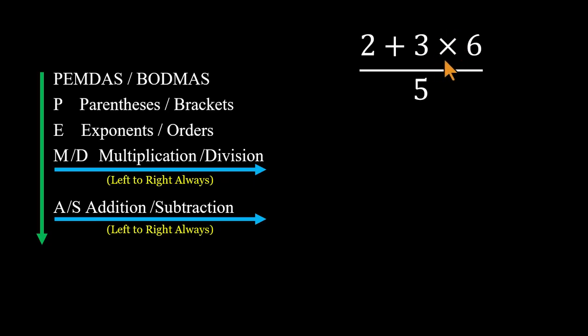This is where most people go wrong. They rush to do 2 plus 3, but according to PEMDAS, you must finish the multiplication first. So inside the numerator, 3 times 6 equals 18. Now add the 2. 2 plus 18 equals 20. Then divide that whole numerator by 5. 20 divided by 5 equals 4.